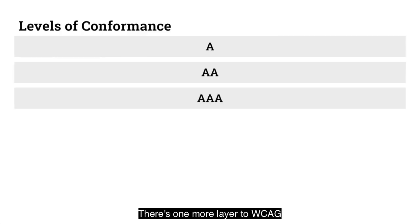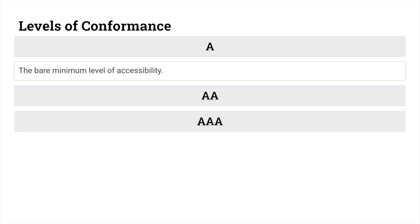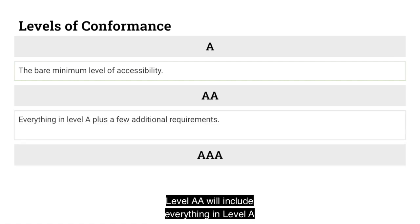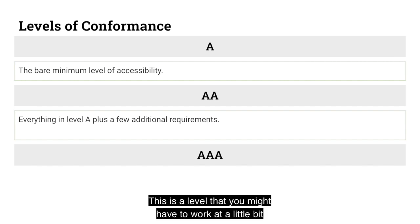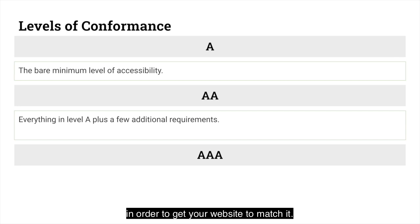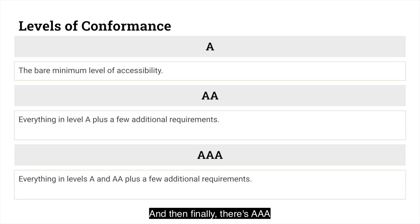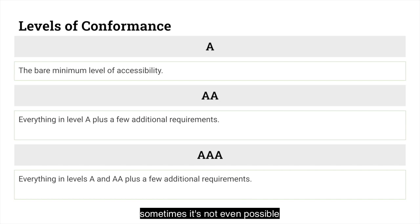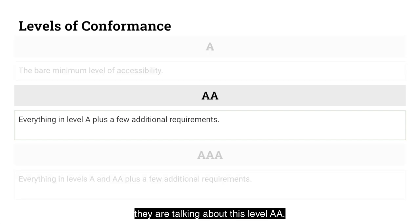There's one more layer to WCAG, and that's levels of conformance. There are three levels: A, AA, and AAA. Level A is just meeting the bare minimum level of accessibility — a lot of websites do this without even really trying. Level AA will include everything in level A and then add a few additional requirements on top. This is a level that you might have to work at a little bit. And then finally, there's AAA, which includes all of the above as well as a few additional requirements. This is the strictest level of accessibility, and depending on your content, sometimes it's not even possible to achieve a AAA level of conformance. When most people are talking about accessibility, they're talking about level AA.